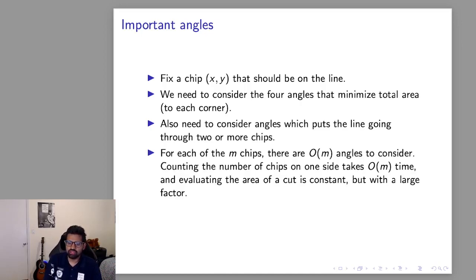So in summary we have M chips to consider. There's M angles per chip, 4 plus M minus 1, and it takes O(M) time to see if a chip is on a side of a line or not. And then we also need to evaluate the area of the square after we've made a cut through a specific line. I'm going to say that's constant time. All in all this is O(M³) which is too slow when M is 3,000. So how can we speed this up?